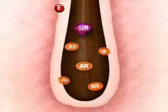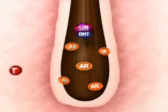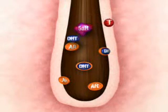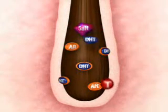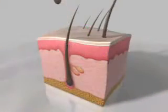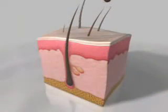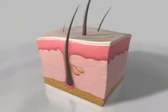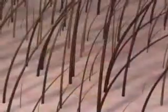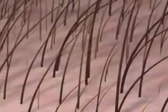This is a closer look at what happens in the hair follicle. First, testosterone is converted to DHT by the enzyme 5 alpha reductase. Then DHT attaches to the receptors on the hair follicle, causing shedding and miniaturization of genetically prone hair follicles.